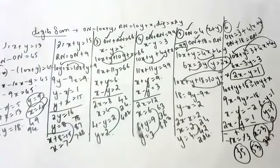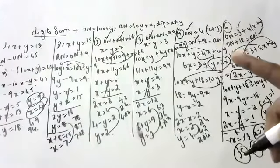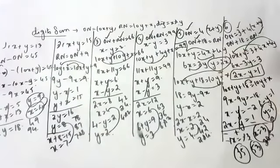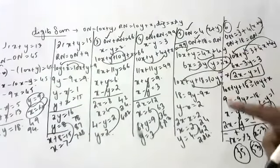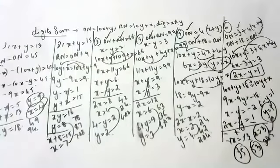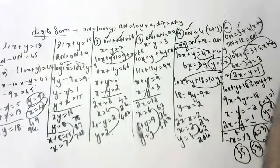So these are some of the two-digit number sums, children. I hope you all understood. Should I tell one more or is it enough? I will go to other variety. These are 2-digit sums. Now we will do some more.